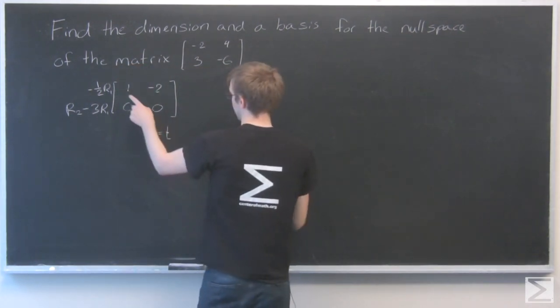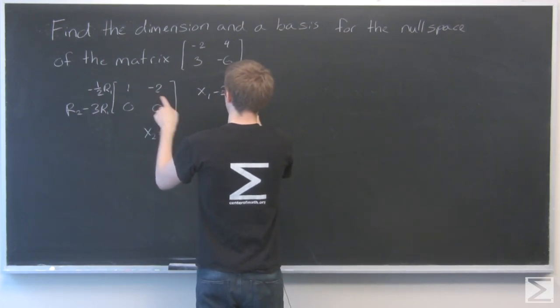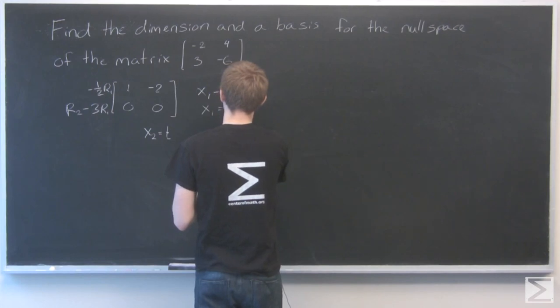So that means x1 minus 2t equals 0, so x1 equals 2t.